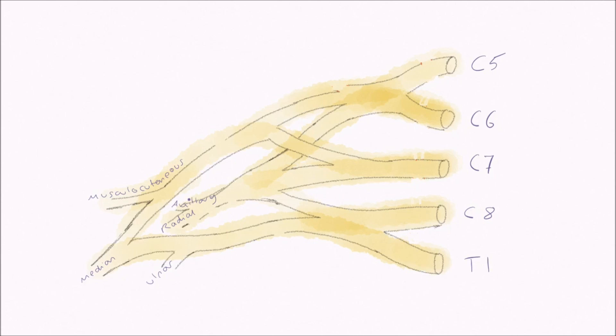Let's start with the two branches from the roots. The first is the long thoracic nerve which originates from C5, 6 and 7. From here it passes vertically down the neck to innervate serratus anterior, also called the boxer's muscle, for its major role in the protraction of the scapula needed to throw a punch.